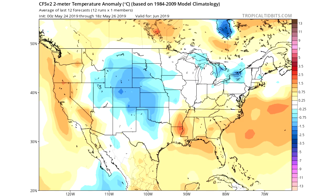Here's the CFS V2. The cold is centered a little bit further west than what I'm calling for, but nevertheless there are colder conditions for the central United States and then warmer conditions for the two coasts — California, Nevada, Oregon, Washington, and then through the southeast: Louisiana, Arkansas, Mississippi, Alabama, Georgia, and up through the rest of the northeast and mid-Atlantic states.